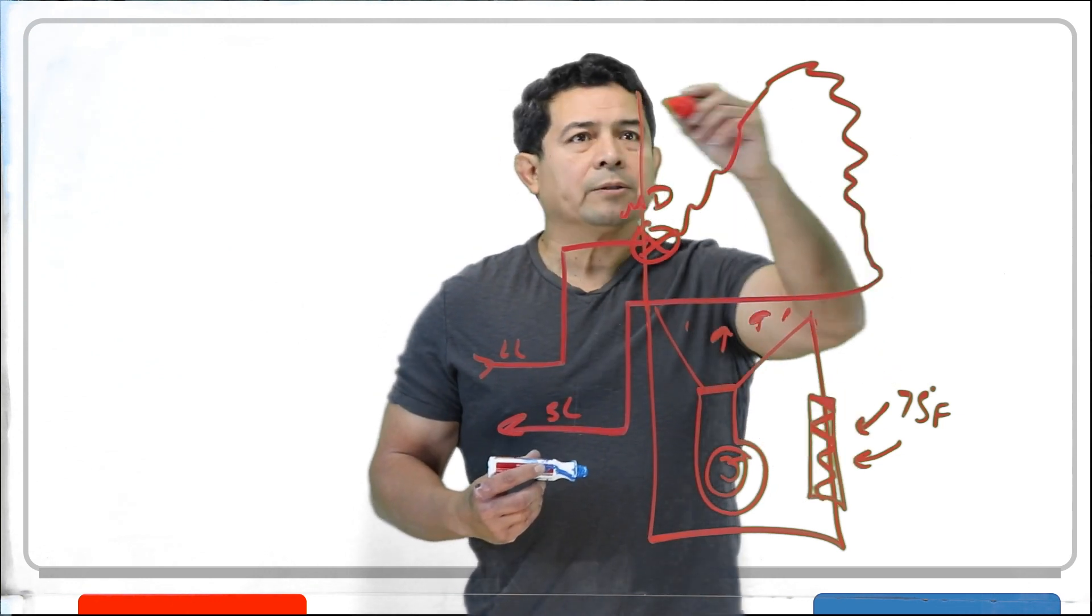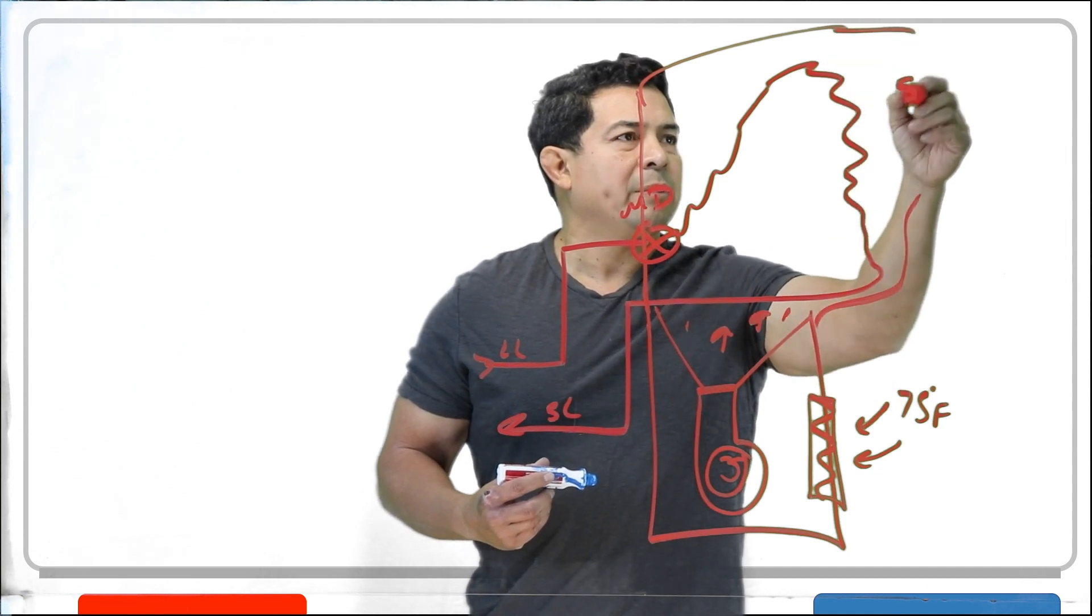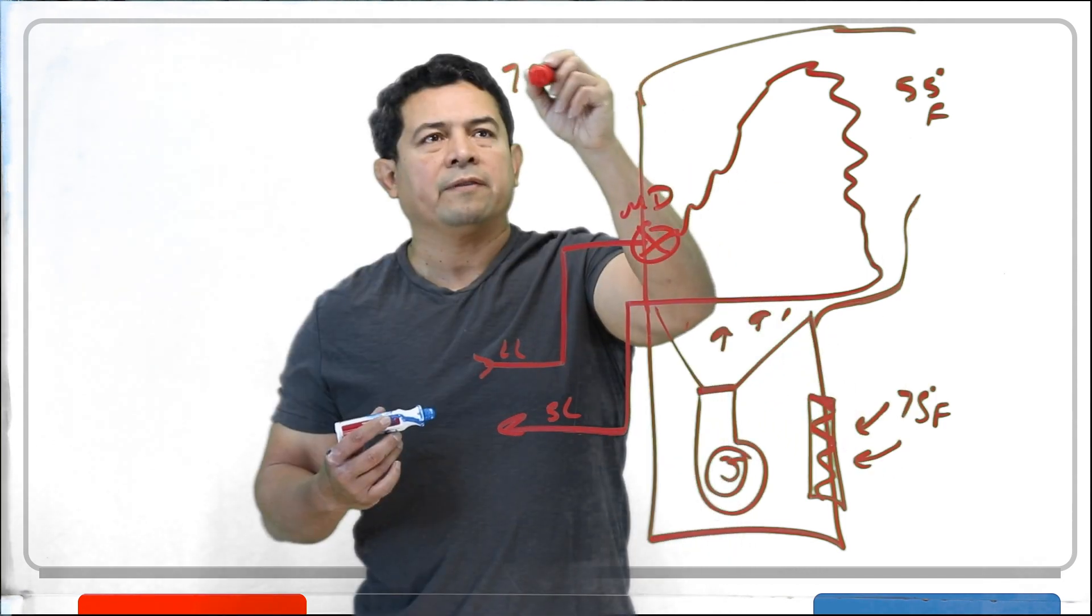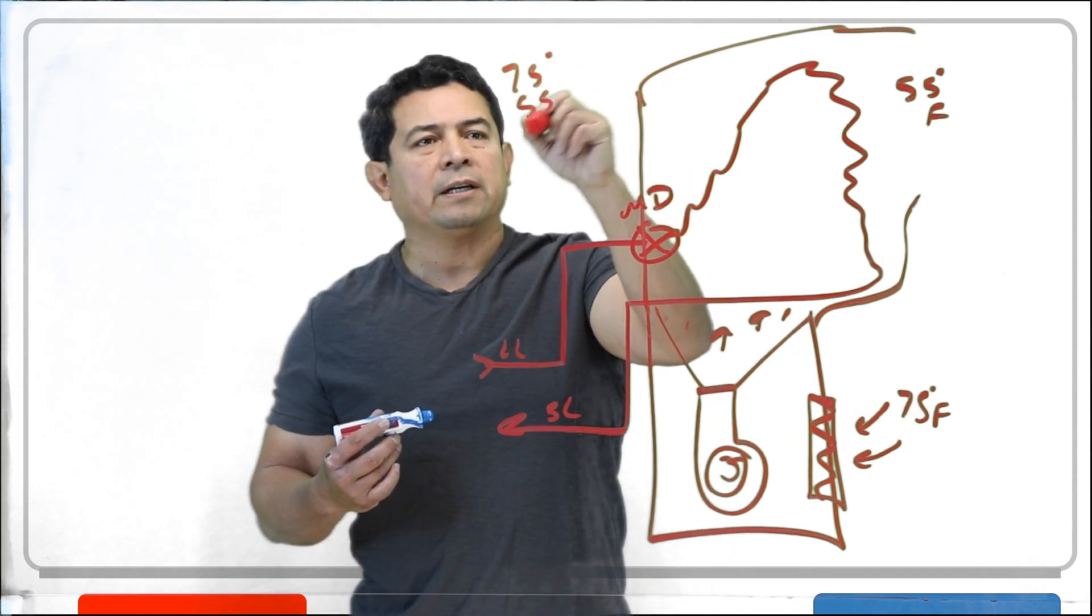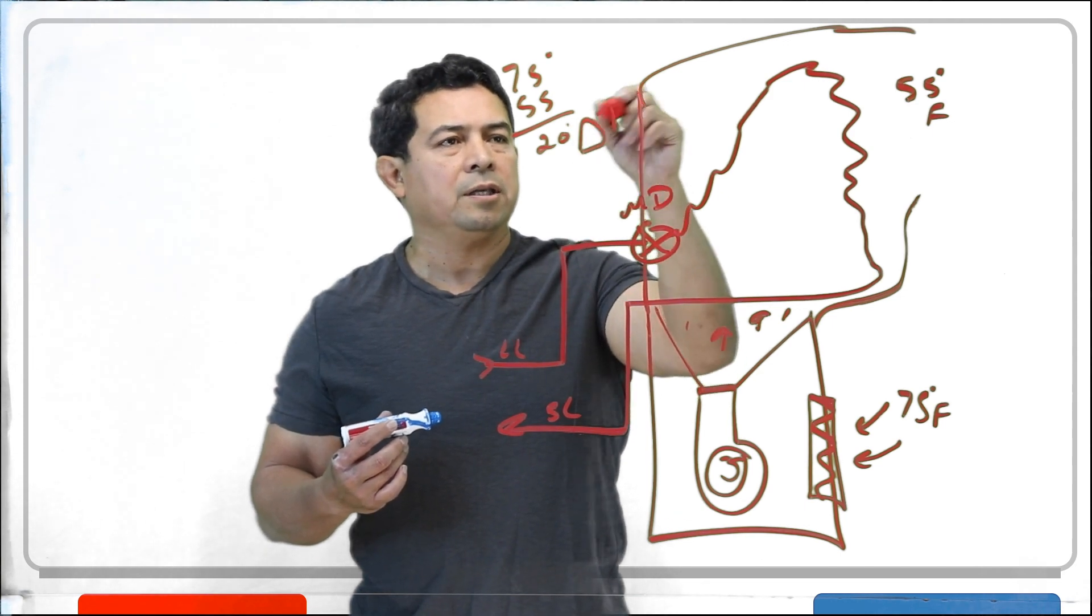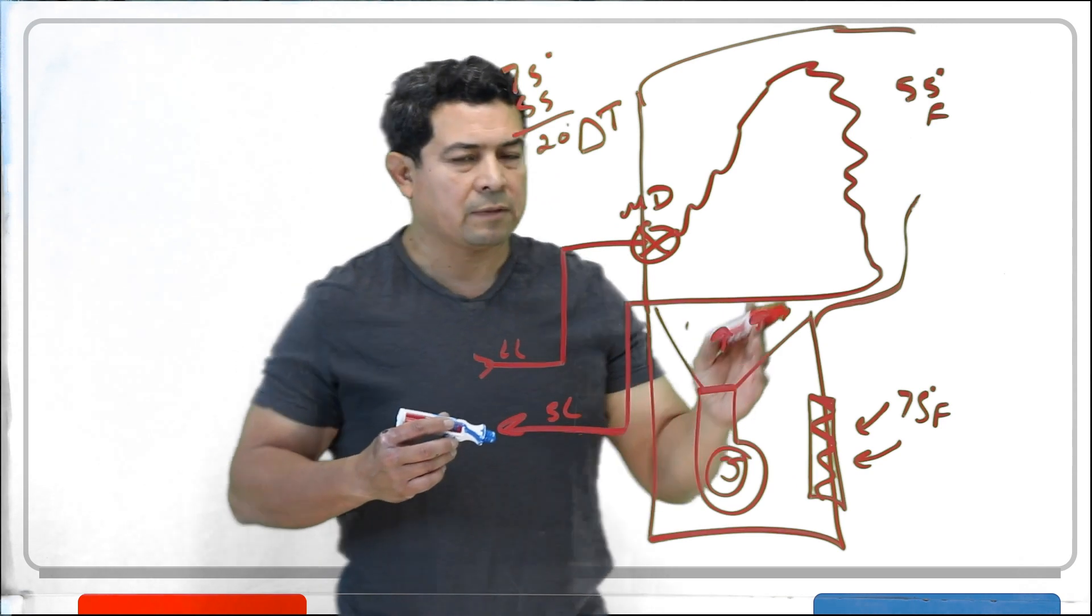And when it comes out of the system like this, it's going to come out at about 55 degrees Fahrenheit. Now, we have 75 minus 55, that gives us a 20 degree delta T. 20 degree delta T coming out. And that's good. That's perfect.